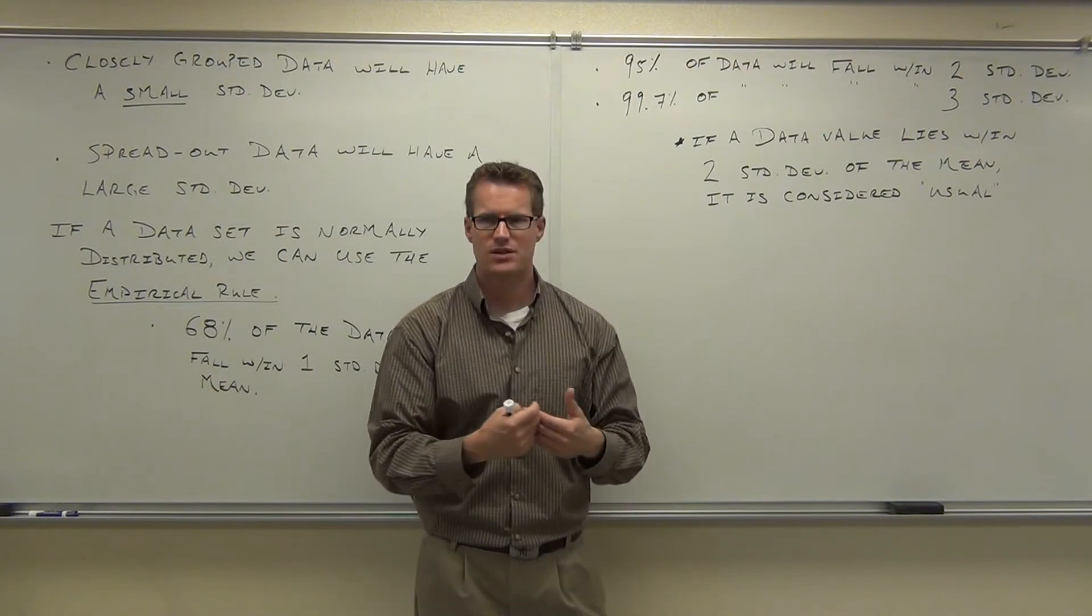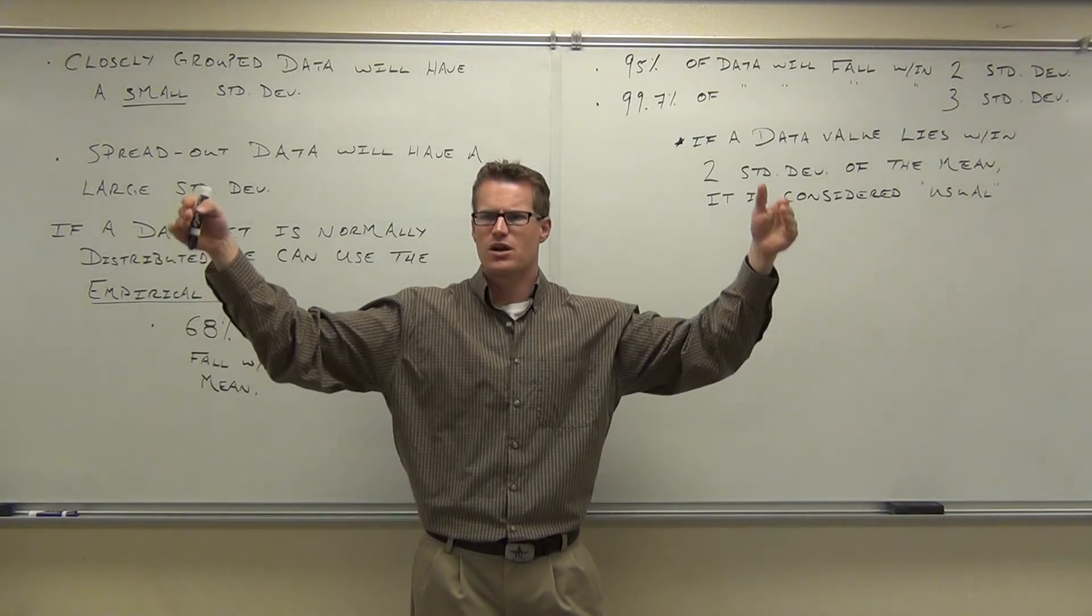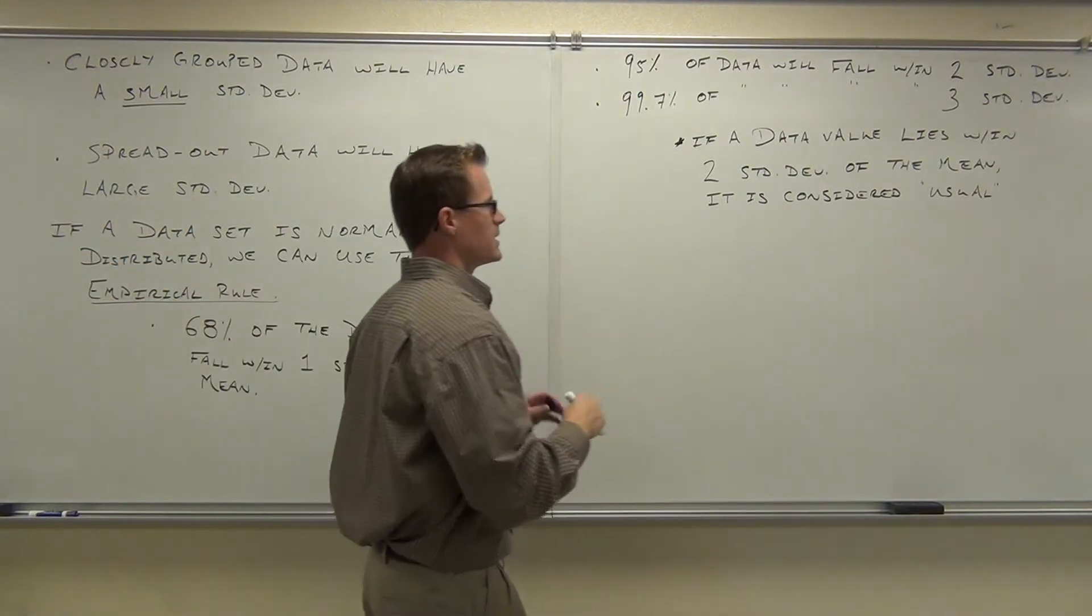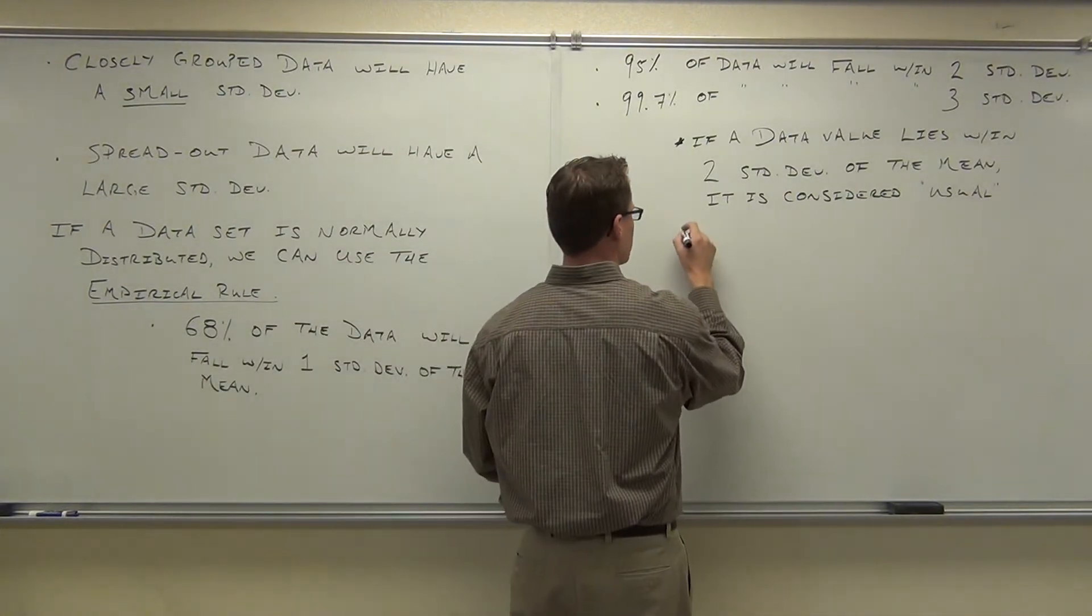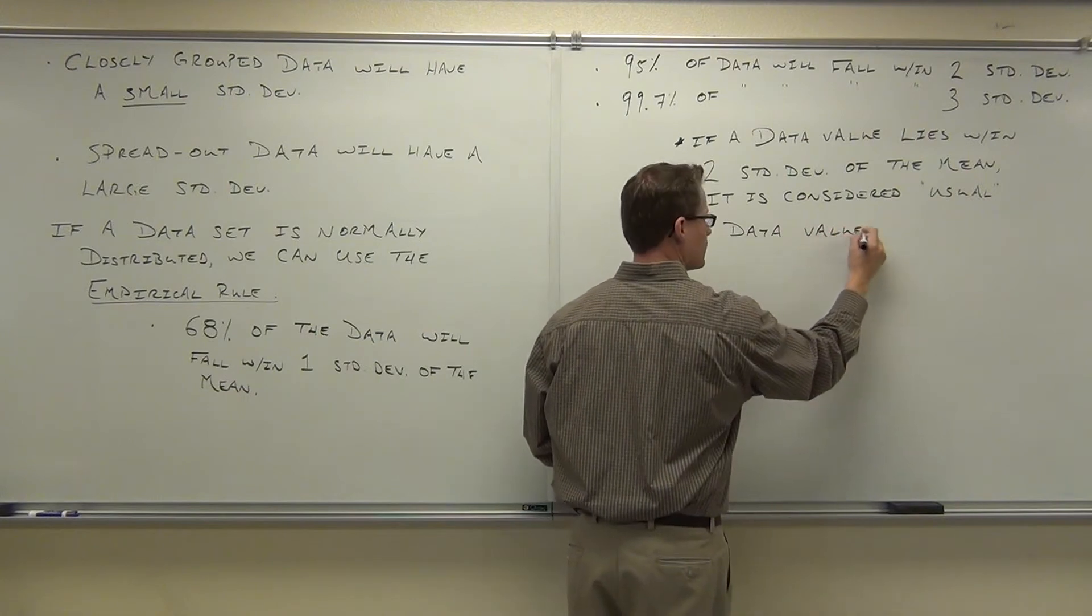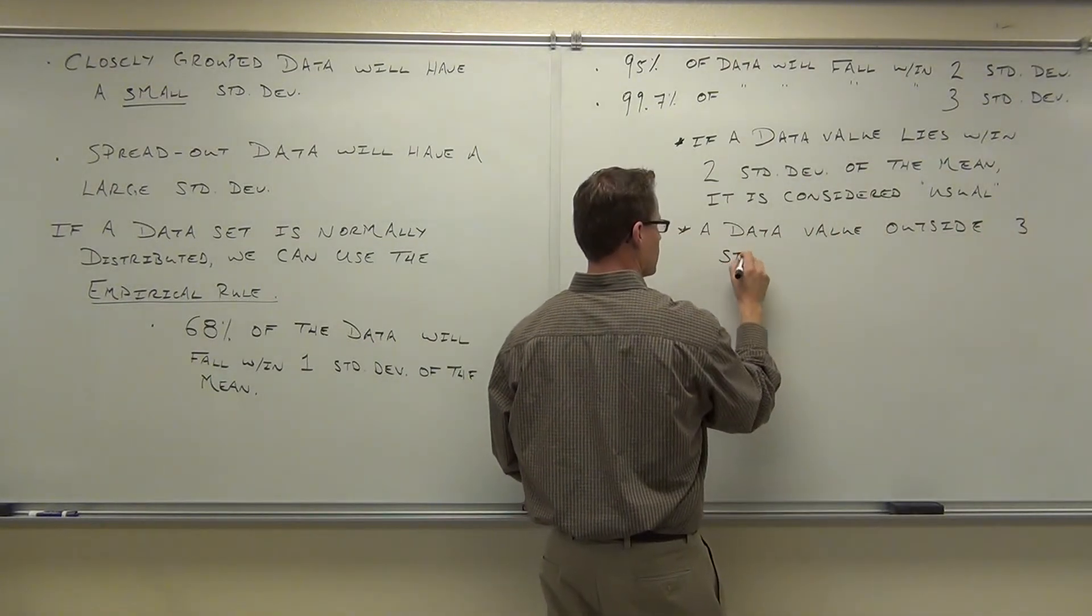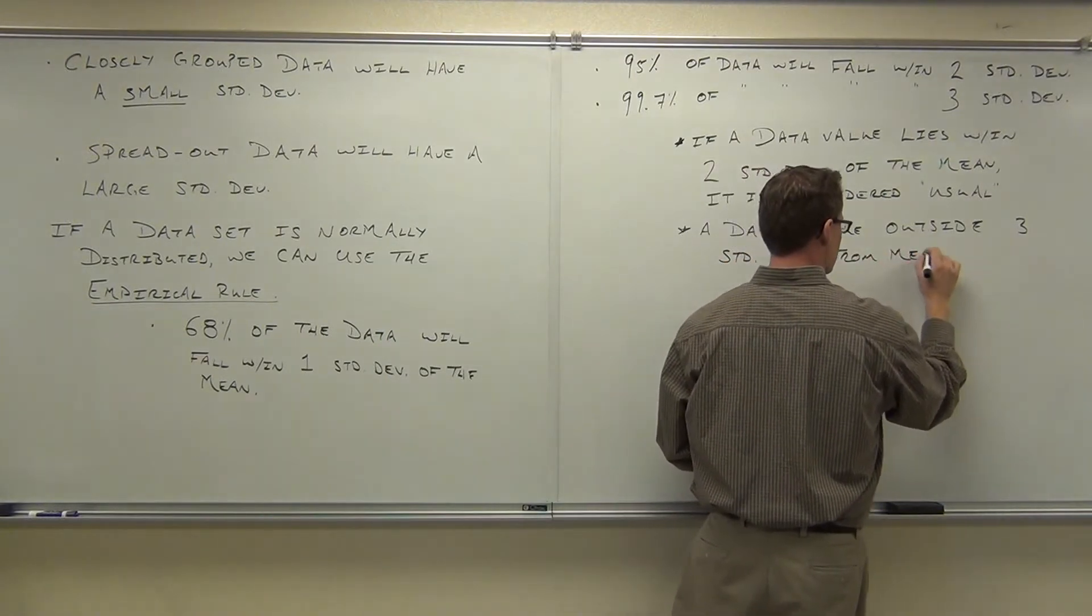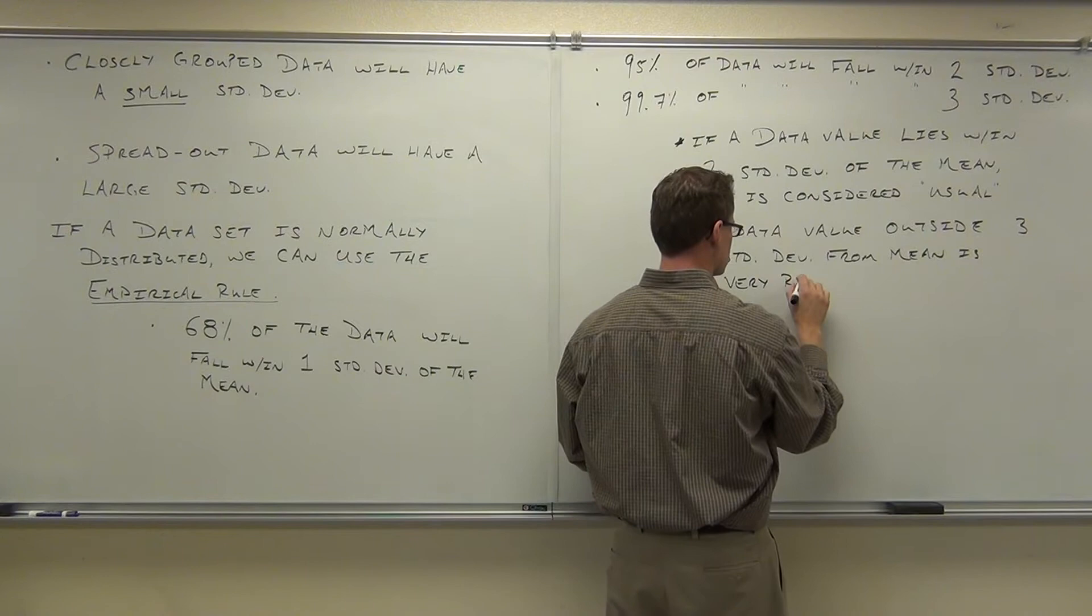We're going to ultimately use this information along with something called a hypothesis test to make decisions about the data that we're going to collect. That's really where we're going with this. Right now, I just need to understand what a normal shape is. And that if you have something normal, that we have things that are considered usual, within one is usual, within two is usual, outside of two is unusual, and things that are very unusual, outside of three, is extremely rare. So, a data value outside three standard deviations from the mean is extremely rare.